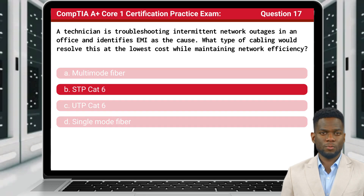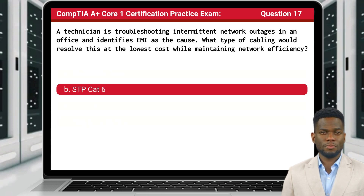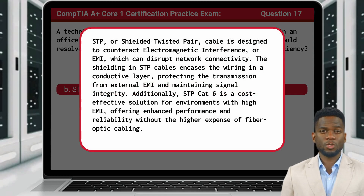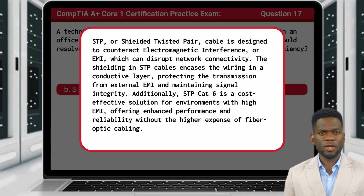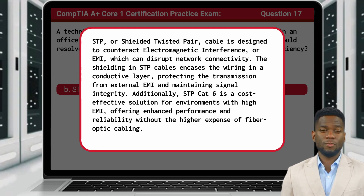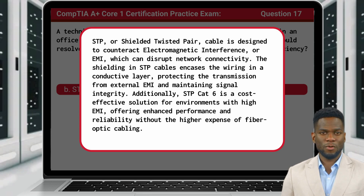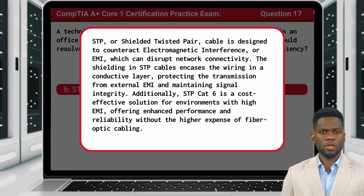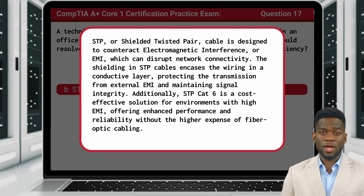The answer is B: STP CAT-6. STP, or Shielded Twisted Pair Cable, is designed to counteract electromagnetic interference, or EMI, which can disrupt network connectivity. The shielding in STP cables encases the wiring in a conductive layer, protecting the transmission from external EMI and maintaining signal integrity. Additionally, STP CAT-6 is a cost-effective solution for environments with high EMI, offering enhanced performance and reliability without the higher expense of fiber-optic cabling.